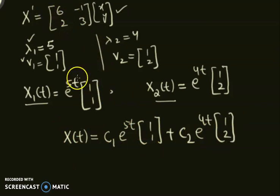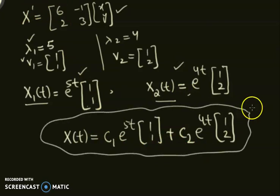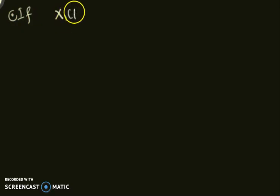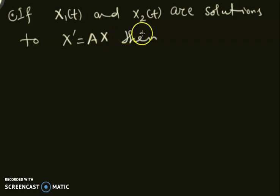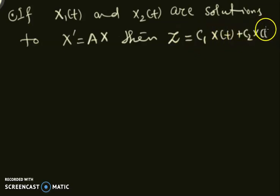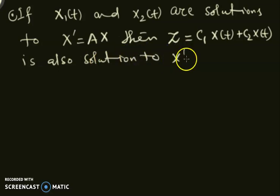The general solution is c1 · e^(5t) · [1,1] + c2 · e^(4t) · [1,2]. We already know x1 and x2 separately solve the system, and combining them linearly also gives a solution. Stated informally: if x1(t) and x2(t) are solutions to x' = Ax, then z = c1·x1(t) + c2·x2(t) is also a solution to x' = Ax.